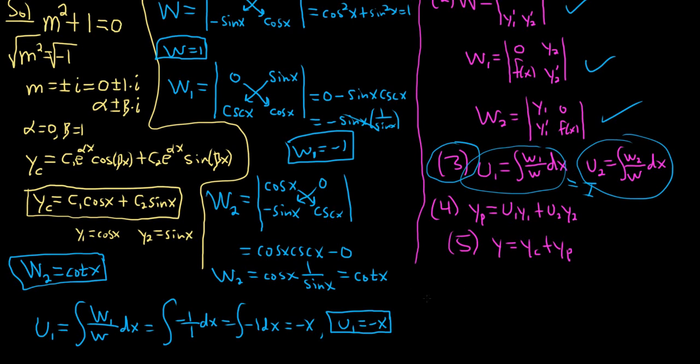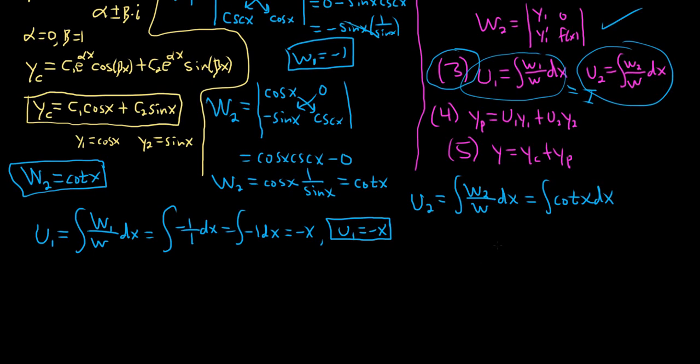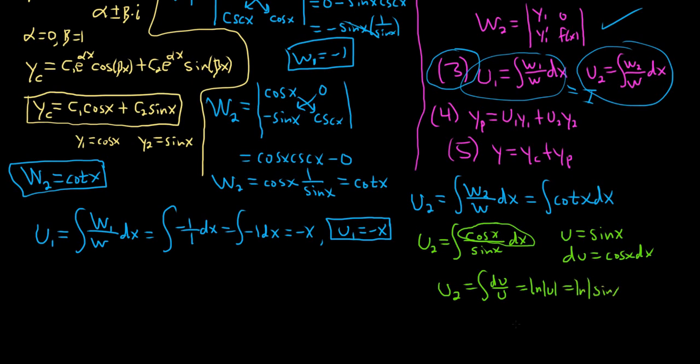So now let's find U2. So U2 is equal to W2 over W dx. So W is 1. W2 is cotangent. So this is just cotangent of x dx. So I have this integral memorized, kind of. I paused there because I was thinking about how to do it. Because if I think about how to do it, I can do it in like a second. Let me show you. Once you know how to do this, you can do it in your head. So cotangent is cosine over sine. And then so if you were to do this, which we will, you would let U be equal to sine. And then dU would simply be cosine x dx. So this entire top piece is your dU. So U2 is equal to dU over U, which is equal to the natural log of the absolute value of U, which is equal to the natural log of the absolute value of sine. So U2 is the natural log of the absolute value of the sine function.